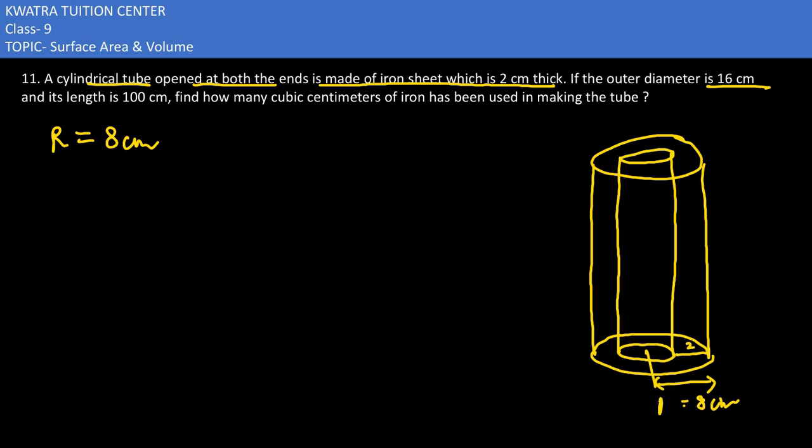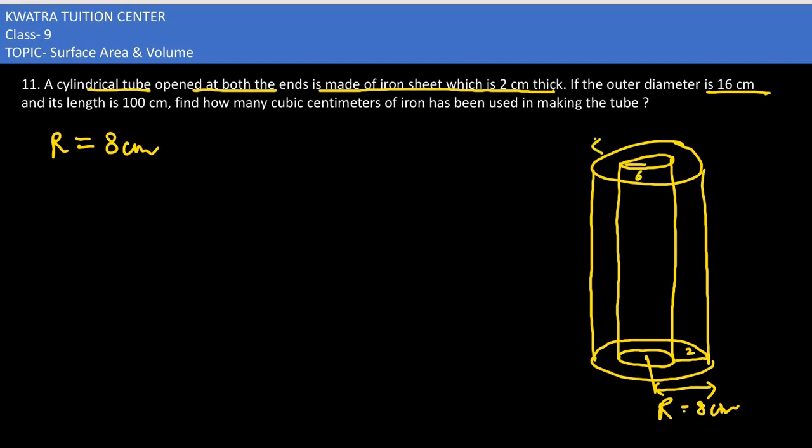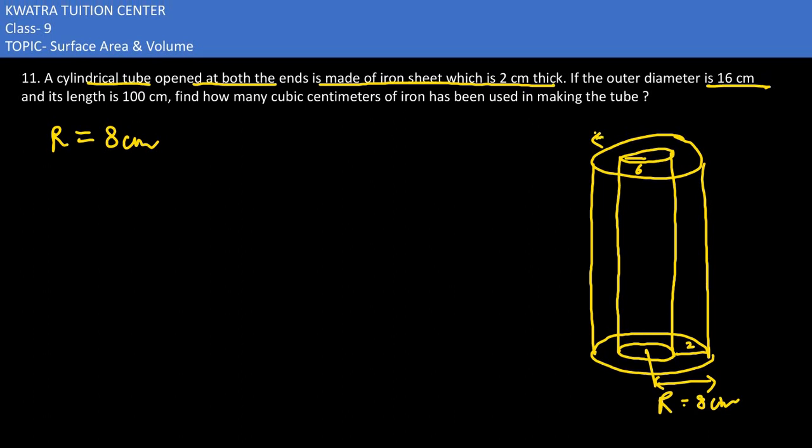The inner radius we'll represent with small r. It would be 6 centimeters because from the outer radius of 8, subtracting the thickness of 2, we get 6 centimeters. The height is given as 100 centimeters. The question asks: how many cubic centimeters of iron has been used?